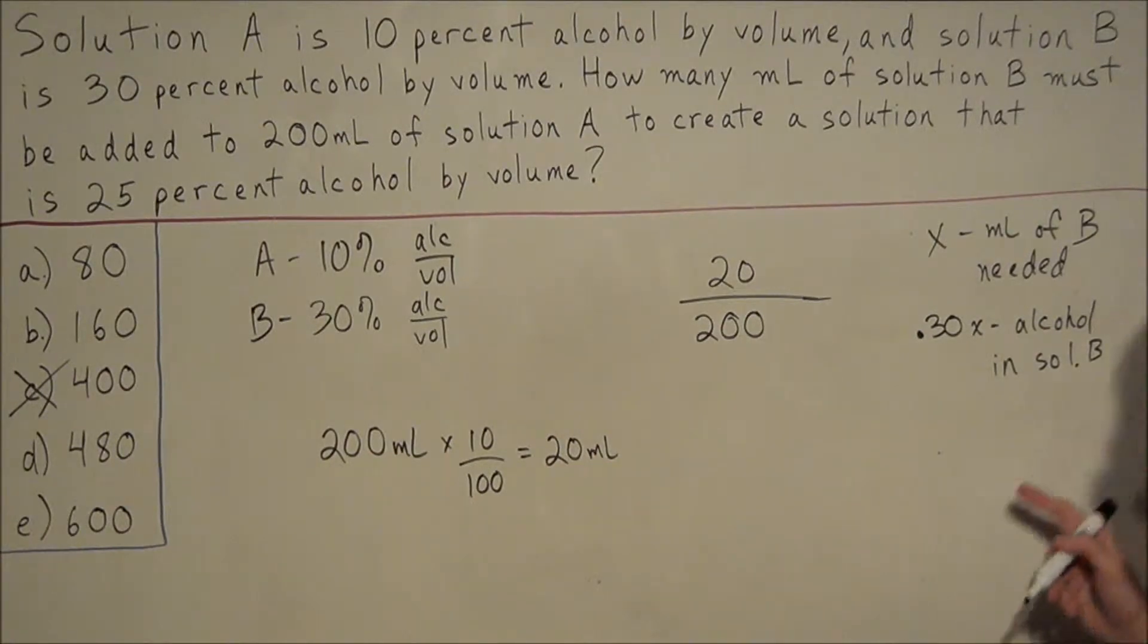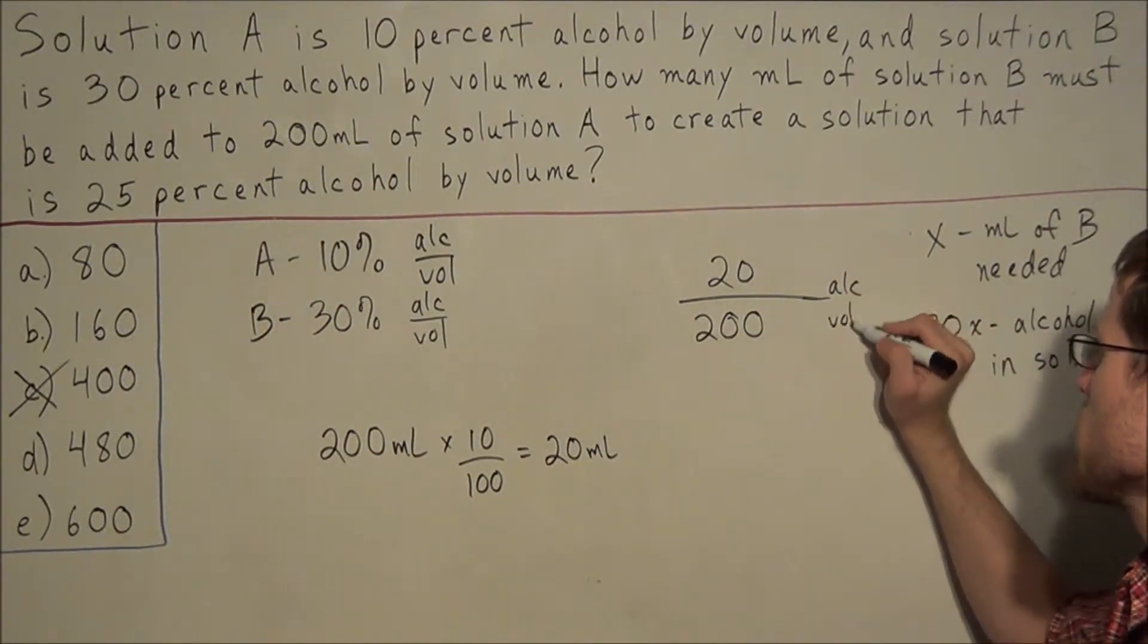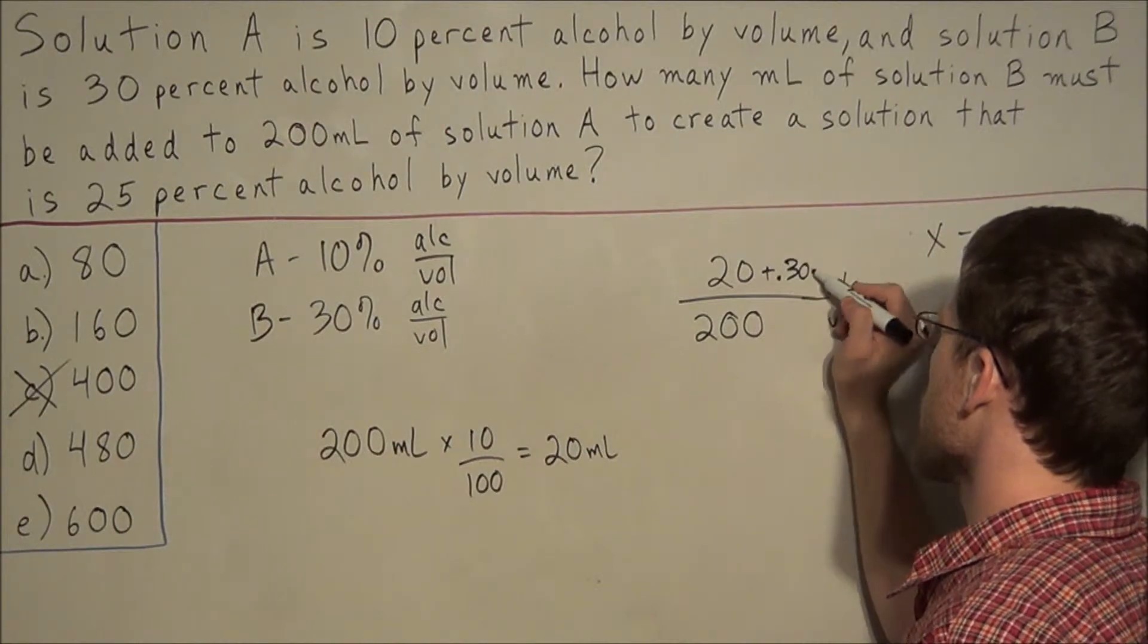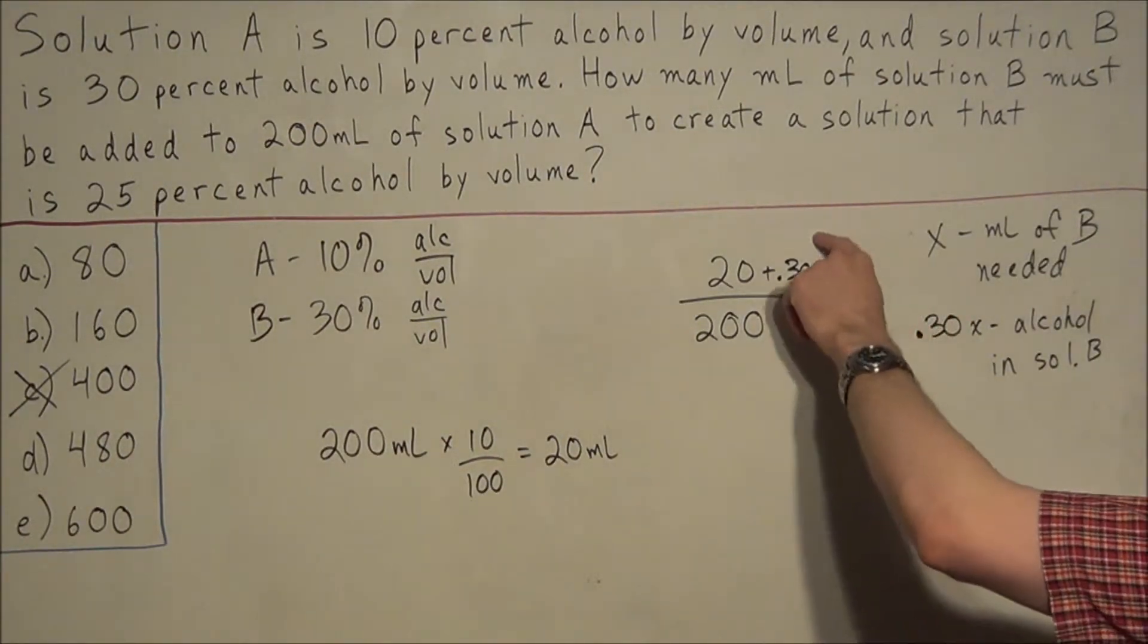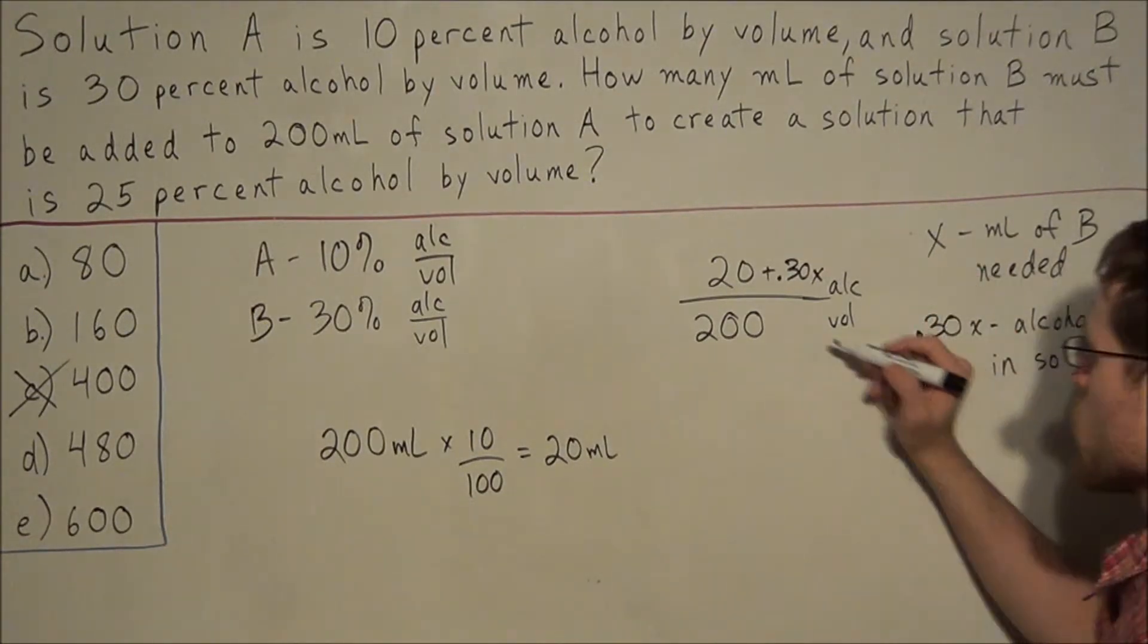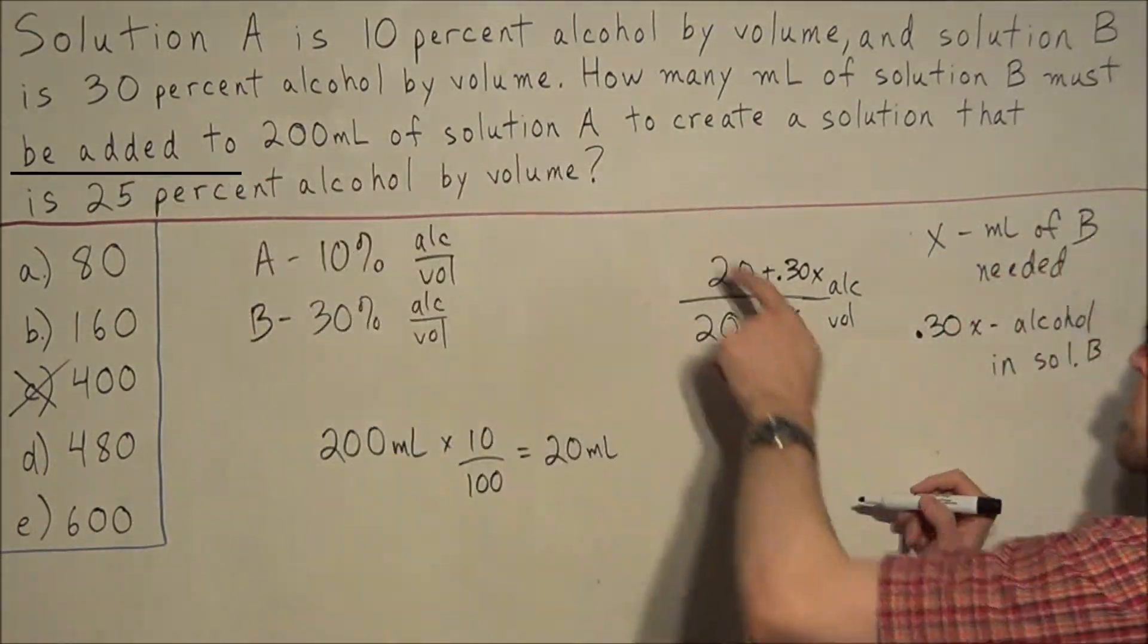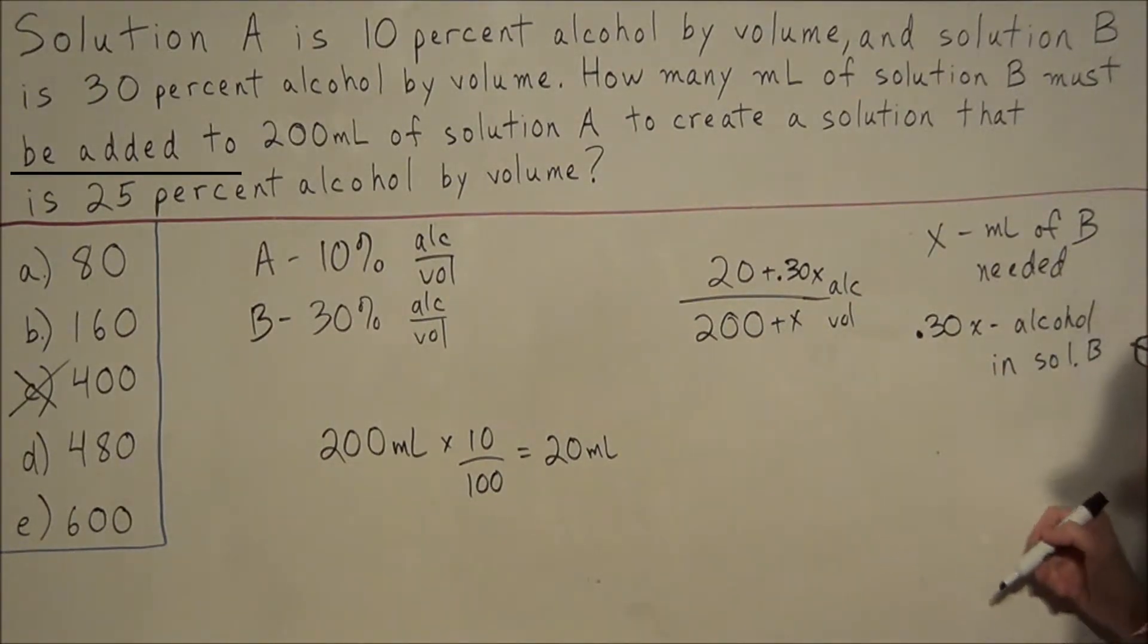So what that tells us, since we're comparing alcohol by volume, we're going to add this 0.30x to the numerator, because this is where we have alcohol. Alcohol is represented in the numerator, and the total volume, X, will go in the denominator, because we're adding this to the 200 milliliters of solution A. So we're going to add this to the 200 milliliters in the denominator.